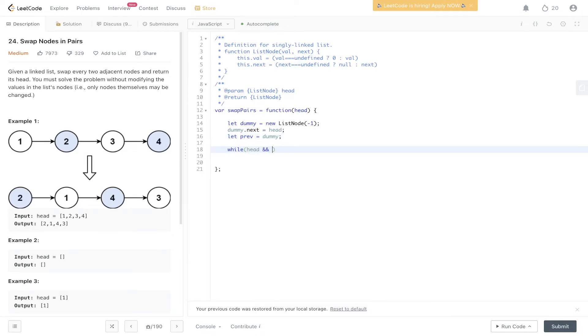So while head and head.next are available so they're not equal to null, we can carry out this loop. We need to declare p1, which is going to be equal to head. p2, which is going to be equal to head.next. Then we need to swap these values. So prev.next is going to be equal to p2. p1.next is going to be p2.next. And p2.next is going to be equal to p1. Then we need to reassign previous and head. So previous is going to equal p1. And head is going to equal p1.next.